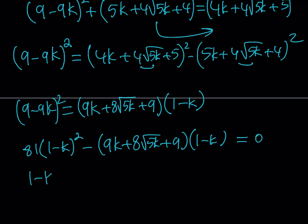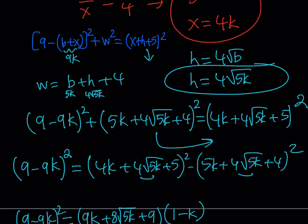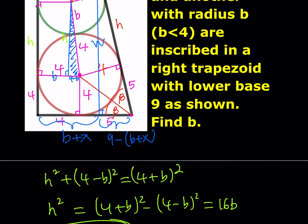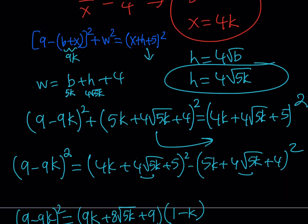Since (1 − k) is a common factor, we can factor it out: (1 − k)[81(1 − k) − (9k + 8√(5k) + 9)] = 0. This gives either k = 1 or the bracket equals zero. K = 1 is not valid because that would make b = 5, but we're given that b must be less than 4. So we reject k = 1 and focus on the other factor.